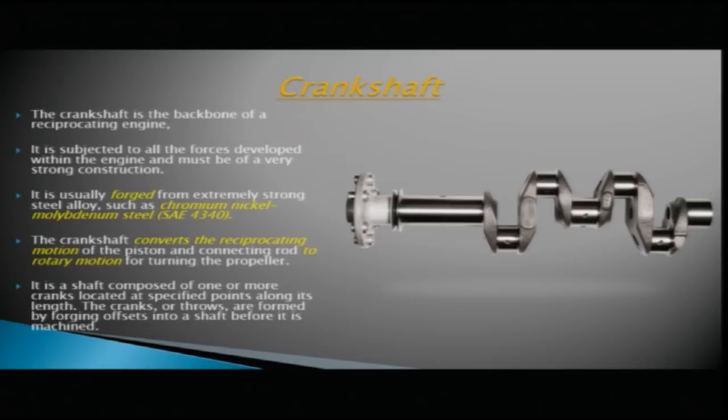On both sides of the central section you can see the throws. The cranks — also called throws — are formed by forging offsets into a shaft before it is machined, at specified points along the length of the shaft.